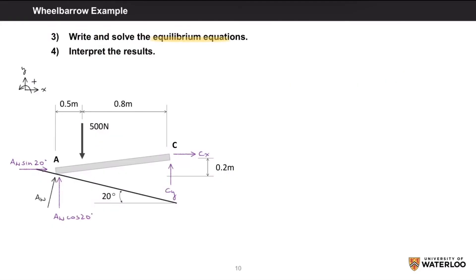Moving on to the equilibrium equations, we'll start with our moment calculations first, and I'll pick C as our turning point. So the sum of M about C equals zero will account for the components of AN and the 500 newton force.